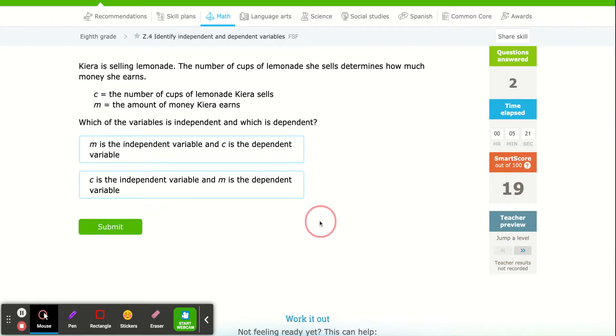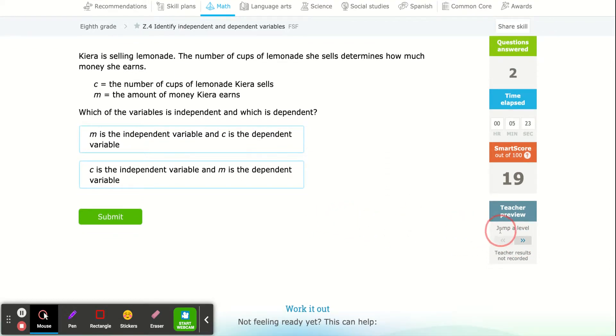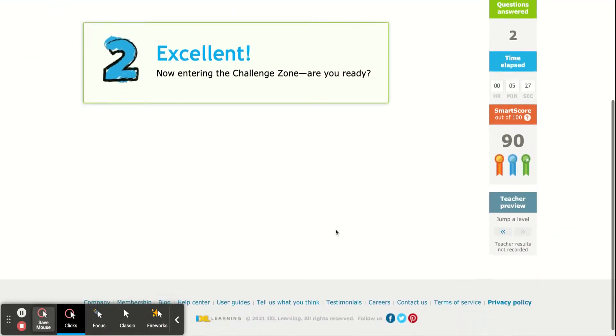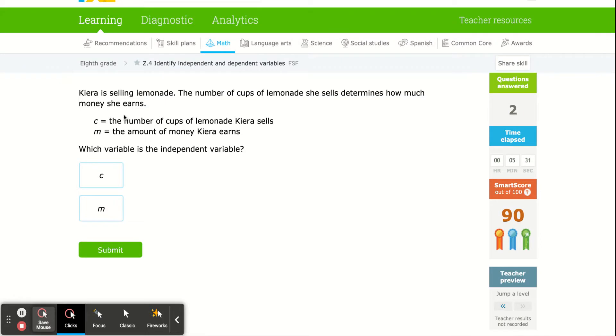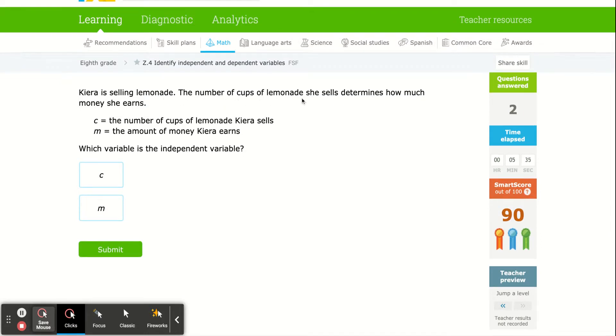I'm going to jump ahead just so we see if it gets much harder. Except it didn't jump ahead. Jump ahead. There we go. Oh, jump all the way up to 90. So again, everyone will be very similar to this. Kara is selling lemonade. The number of cups of lemonade she sells will determine how much money she earns. Well, that actually makes sense, right? If she only sells one glass of lemonade, she's not going to make much money. But if she sells a bunch of lemonade, many glasses, she'll make more money.